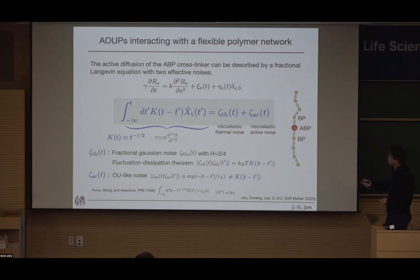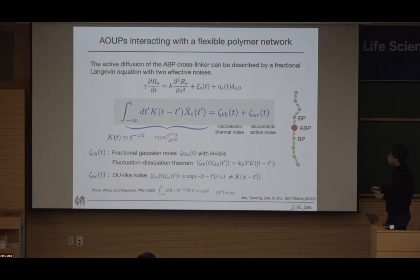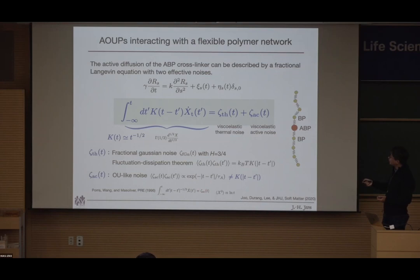We found a published paper that studied a very similar equation and showed that if the active noise correlation is exponential, the MSD gives log(T), while the thermal part gives sqrt(T). After that, we moved to the semi-flexible polymer network, which is more biologically relevant. The MSD now shows interesting different behavior: the Péclet number zero case gives exponent three-quarters, which is the known exponent for undulation dynamics of semi-flexible polymers.